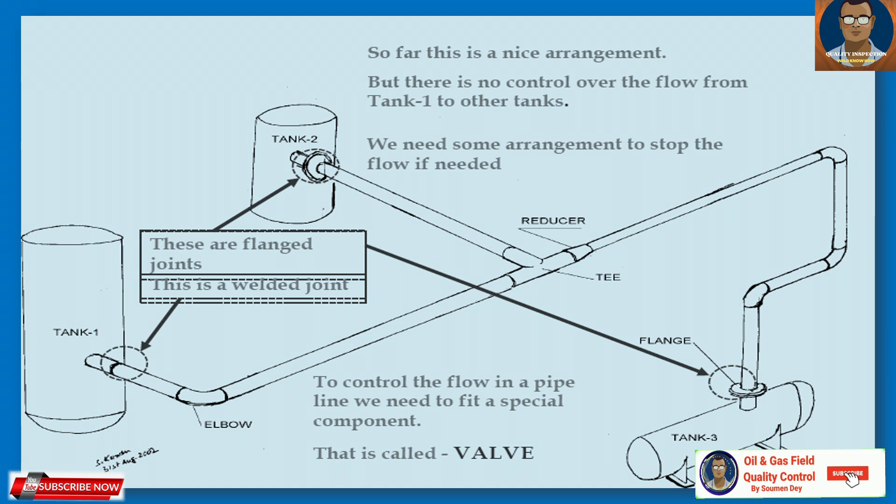Now it is connected. So far it is a nice arrangement, but there is no control over the flow from tank 1 to the other tanks. We need some arrangement to stop the flow if needed. To control the flow in the pipeline, we need to fit a special component called a valve.